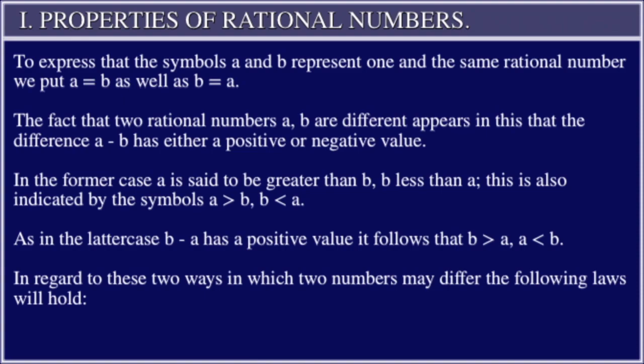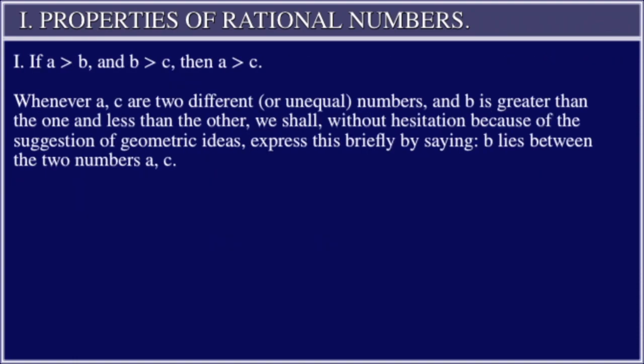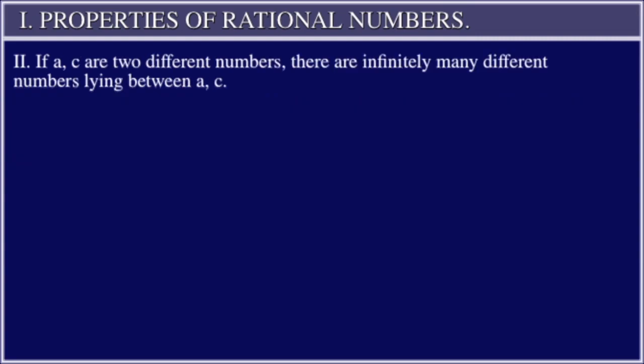following laws will hold: I. If a > b and b > c, then a > c. Whenever a, c are two different or unequal numbers, and b is greater than the one and less than the other, we shall, without hesitation because of the suggestion of geometric ideas, express this briefly by saying b lies between the two numbers a, c.